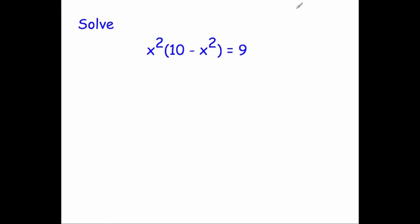Let's first expand our brackets. x² times 10 is 10x², and x² times -x² is -x⁴, and that still equals 9.